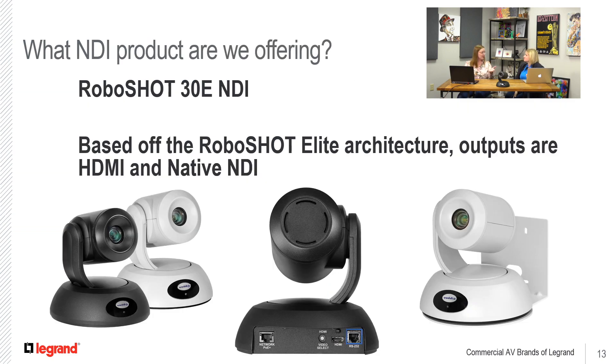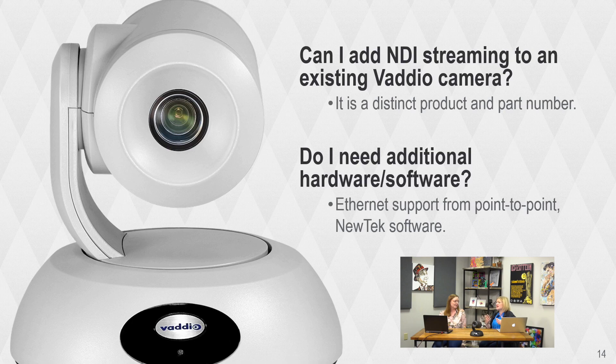So what product are we offering? We're offering the 30E NDI. The E stands for Elite — it is based off of our new RoboShot Elite camera architecture. The outputs on it: we have simultaneous NDI streaming, and then you get a courtesy HDMI output to do whatever you want with. This is a unique part number — the RoboShot 30E NDI. It's not something you can add to an existing SDI camera. To get the full NDI camera that this is offering, it is a unique part number.